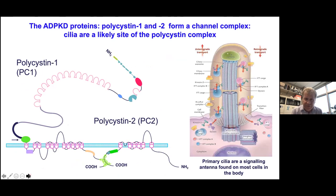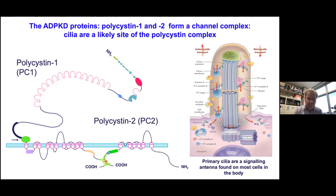These genes encode the polycystin-1 and polycystin-2 proteins. These two proteins form a complex thought to be involved in calcium transport, and their site is thought to be on the primary cilium — a little antenna-like extension found on most cells in the body — which has important signaling functions that the polycystins are thought to be involved in.